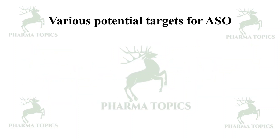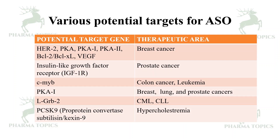Various potential targets for antisense oligonucleotides: from this table, the potential target genes include HER2, PKA, PKA1, PKA2, BCL-2, BCL-XL, and VEGF — related to breast cancer. Insulin-like growth factor targeted by ASOs is useful in treatment of prostate cancer. C-MYB is related to colon cancer and leukemia, and ASOs targeting C-MYB are useful in treating both.